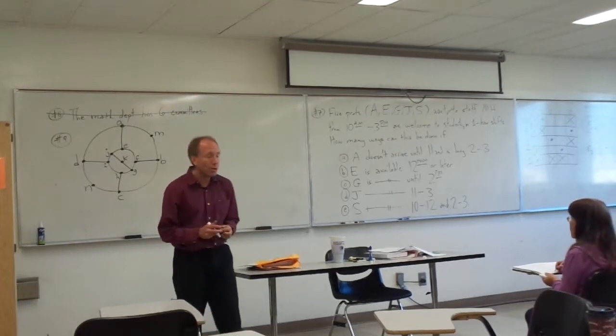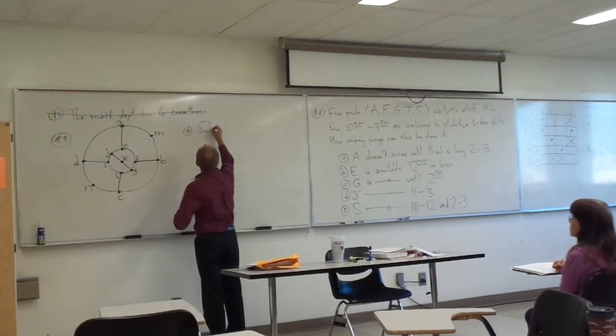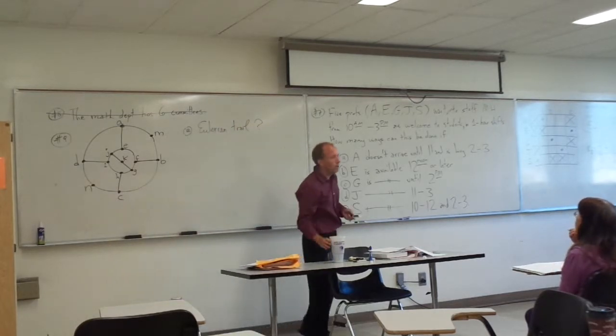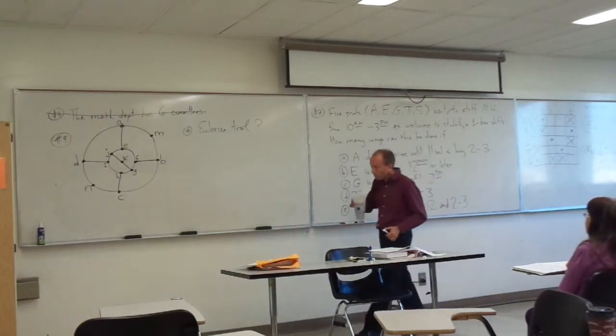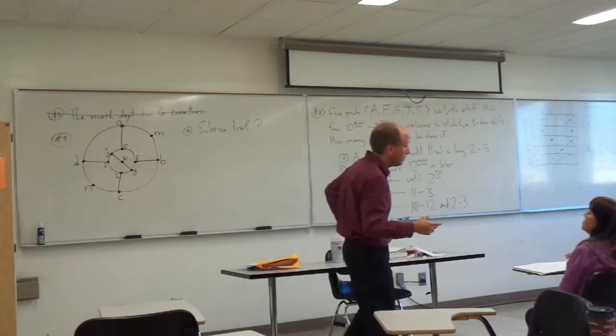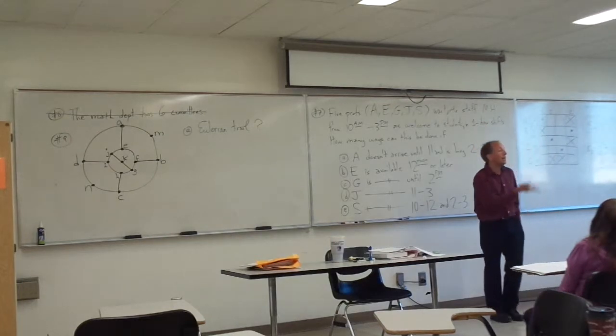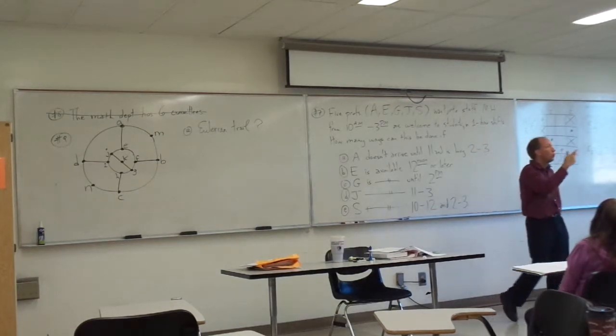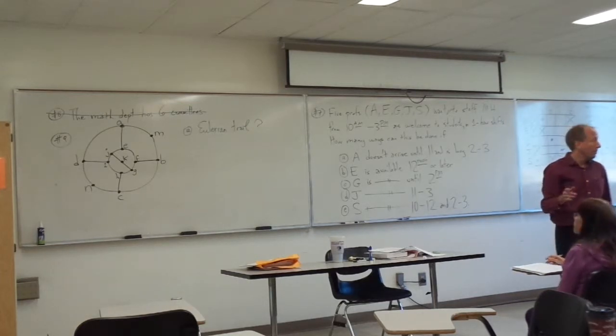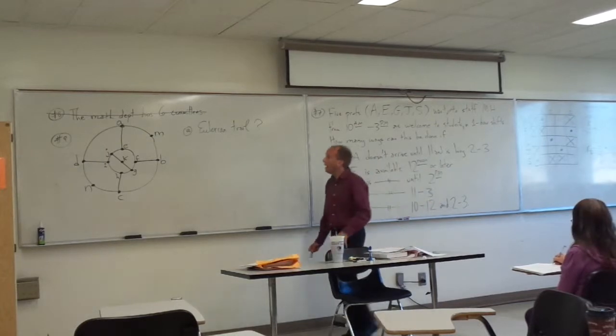The question is going to be, the first question is going to be, is there an open or a closed Eulerian trail? So part A, is there an Eulerian trail? How do you decide if a graph has an Eulerian trail? Okay. Look at the degree. What is an Eulerian trail, by the way, just to remember the definition?